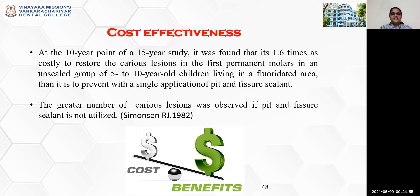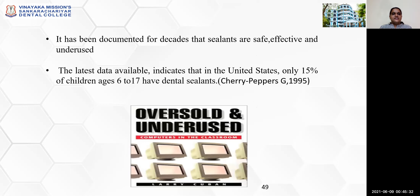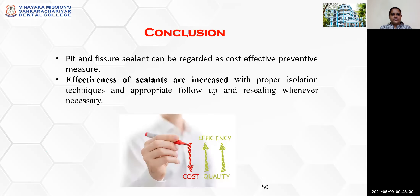It was found that it is 1.6 times as costly to restore caries lesions in first permanent molars in an unsealed group of 5 to 10 year old children living in a fluoridated area than to prevent with a single application of pit and fissure sealants. A greater number of caries lesions was observed if pit and fissure sealant is not utilized — this was reported by Simonson in 1982. Sealants are found to be very cost-effective. It has been documented for decades that sealants are safe, effective, and underused. The latest data indicates that in the United States, only 15% of children aged 6 to 19 have dental sealants, as reported by Sherry Peppers G. in 1995 — so sealants are always oversold and underused.